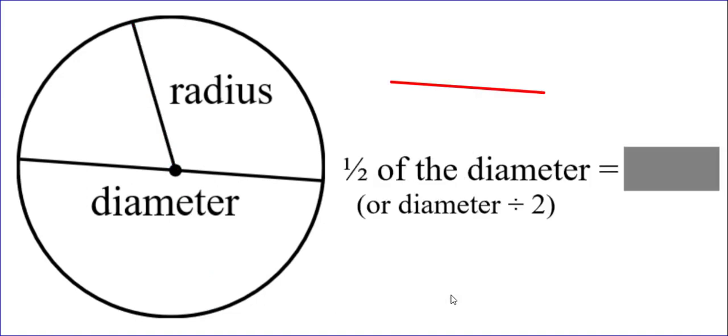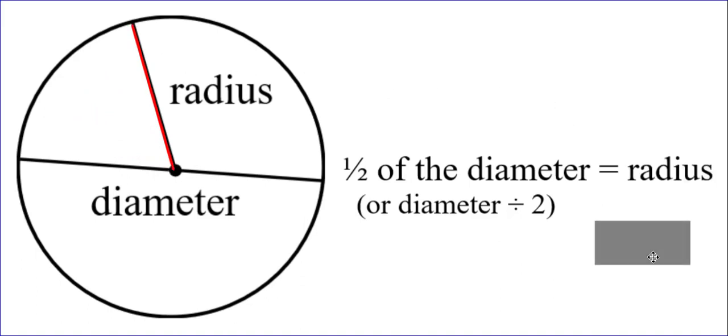You should also know that half of the diameter, or the diameter divided by two, is going to give you something very important. Let's take a look at this. Here's half of the diameter, and if you notice, it matches the radius. So half of the diameter will give you the radius.